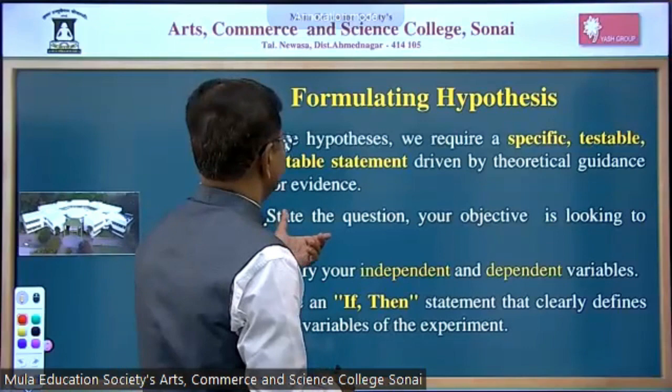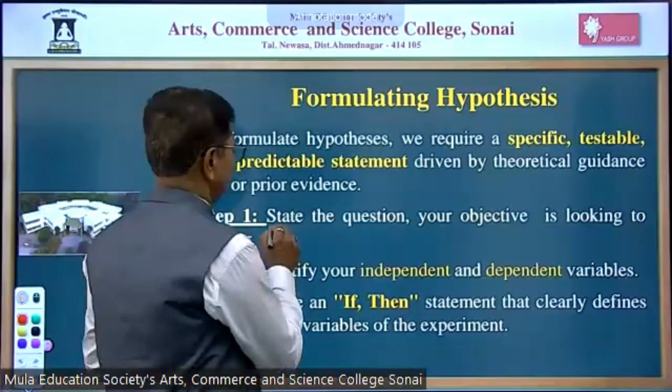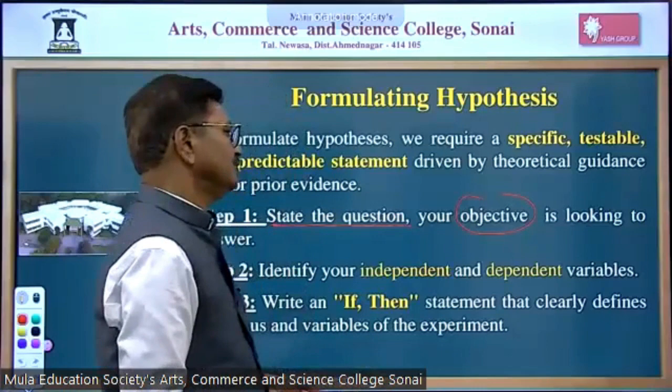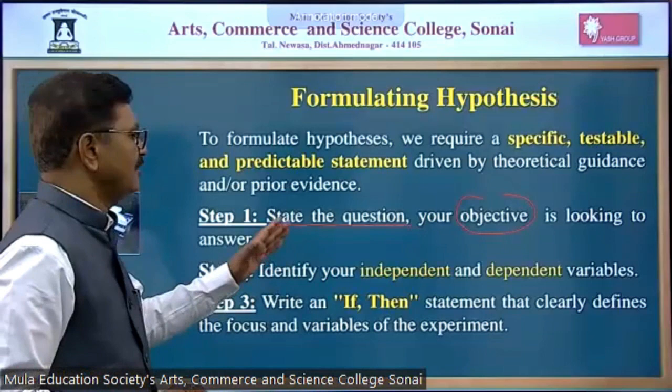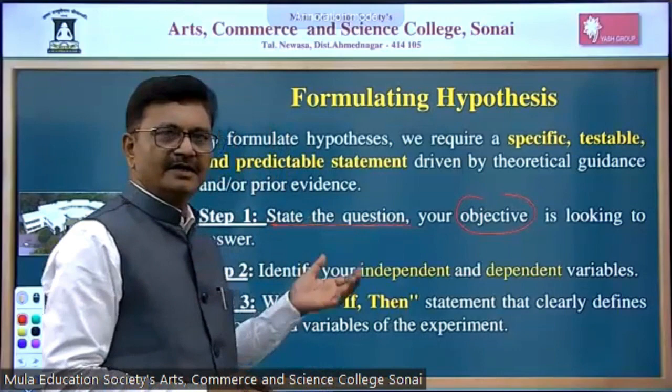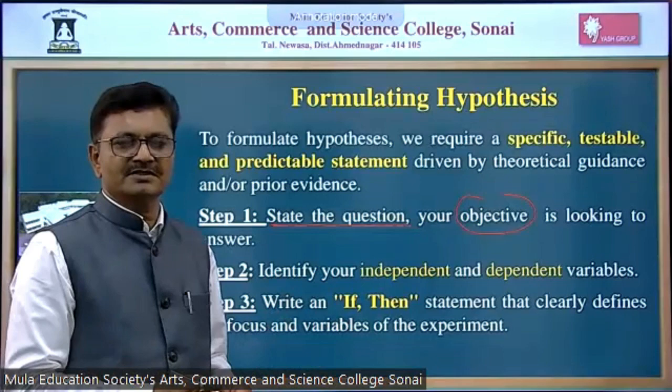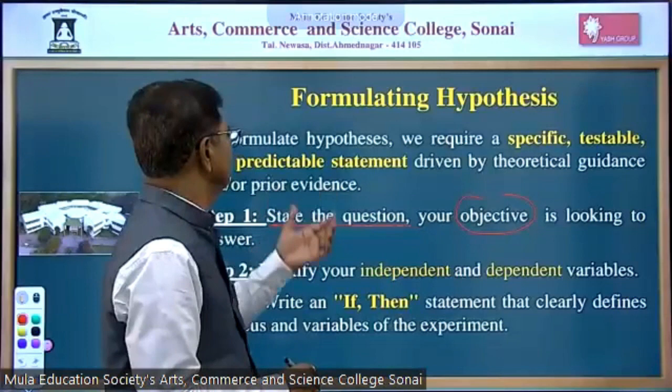There are three different steps in formulating a hypothesis. The first step is to state the question your objective is looking to answer. You have to design a question, and that question should answer your objective. Think about how you will get the answer to that particular objective. You have to design a statement based on your objective — what is the aim and what are the objectives of your research — and that statement is basically your hypothesis.